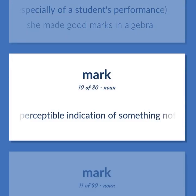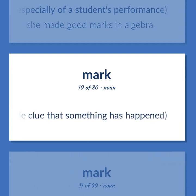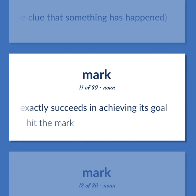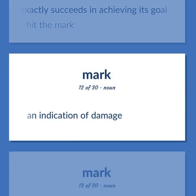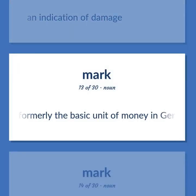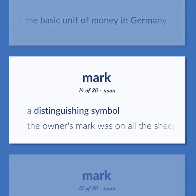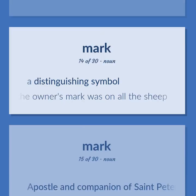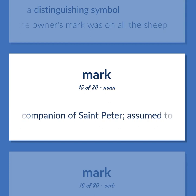Mark: a perceptible indication of something not immediately apparent, as a visible clue that something has happened. Something that exactly succeeds in achieving its goal — hit the mark. An indication of damage. Formerly the basic unit of money in Germany. A distinguishing symbol — 'The owner's mark was on all the sheep.' Apostle and companion of Saint Peter, assumed to be the author of the second gospel.